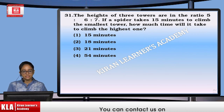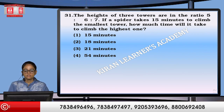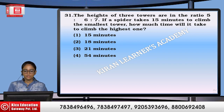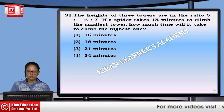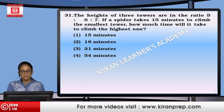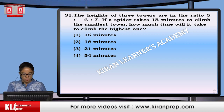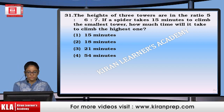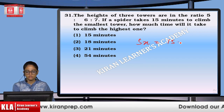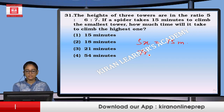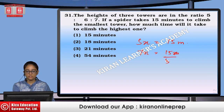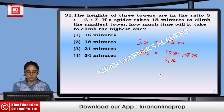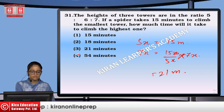The heights of three towers are in ratio 5:6:7. If a spider takes 15 minutes to climb the smallest tower (5X), how long to climb the highest (7X)? Time = (15/5X) × 7X = 21 minutes. Option number 3.